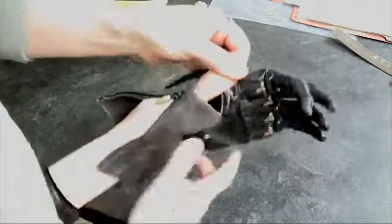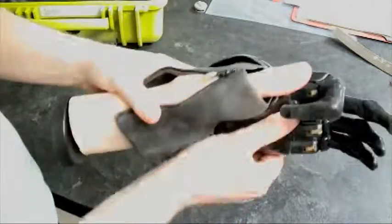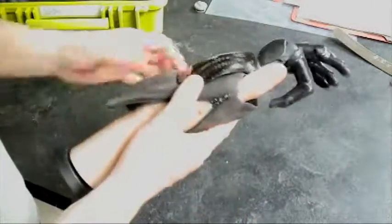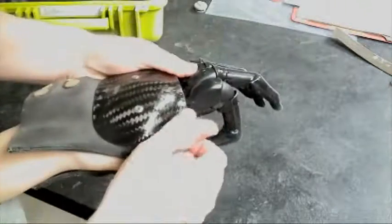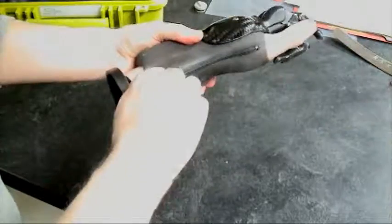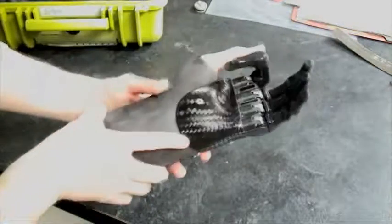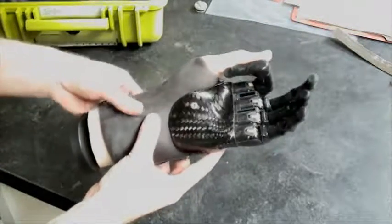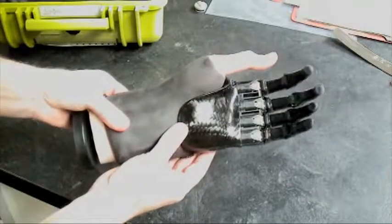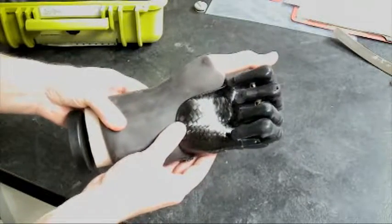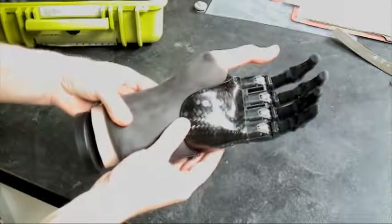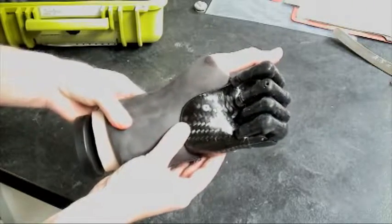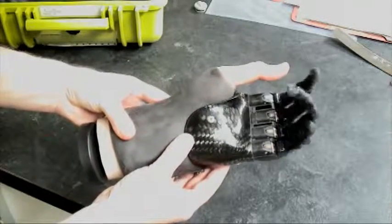You can see the prosthesis goes on. I'll turn that off like so. You can see the grasp that can be achieved from the residual limb.